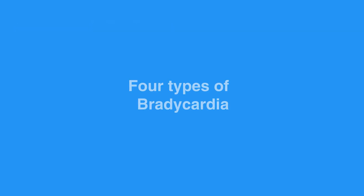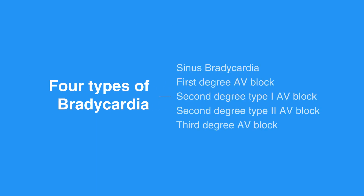We will review four types of bradycardia in this lesson, including sinus bradycardia, first degree AV block, second degree type 1 AV block — also known as Wenckebach — second degree type 2 AV block — also known as Mobitz 2 — and third degree AV block, also known as complete heart block.